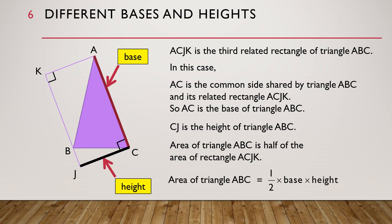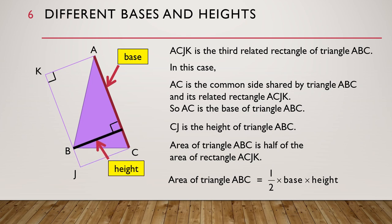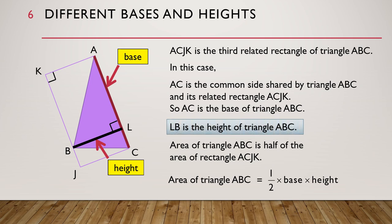Again, just like the previous examples, the height of the triangle may not be shown like this. It may be shown as this line instead. So the line LB is also the height of triangle ABC, and we can use LB to find the area.